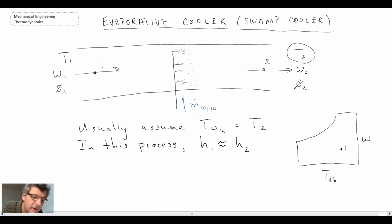We would be going from state one up to state two. So that would be what the process would look like for one of these evaporative coolers or swamp coolers.